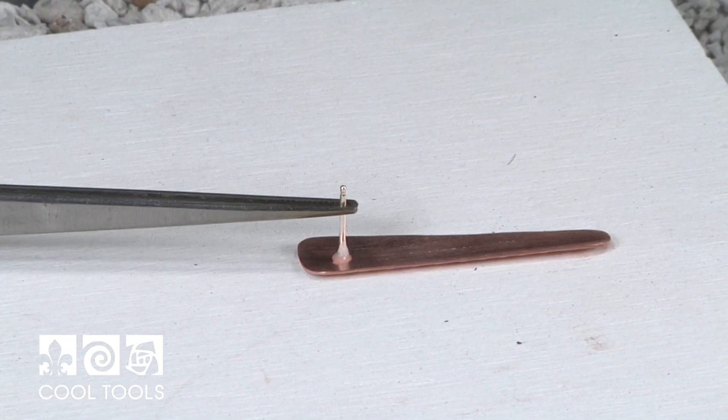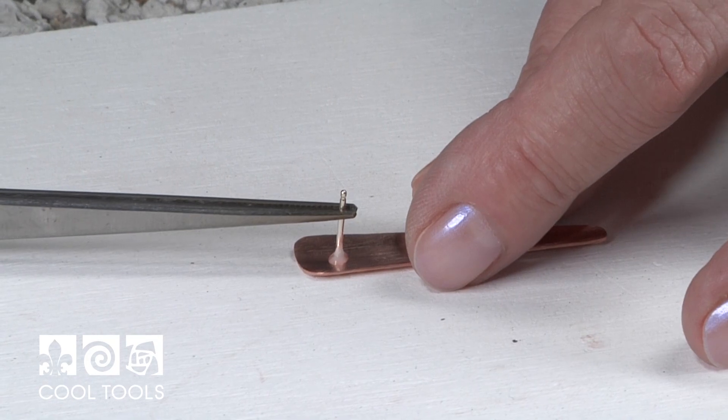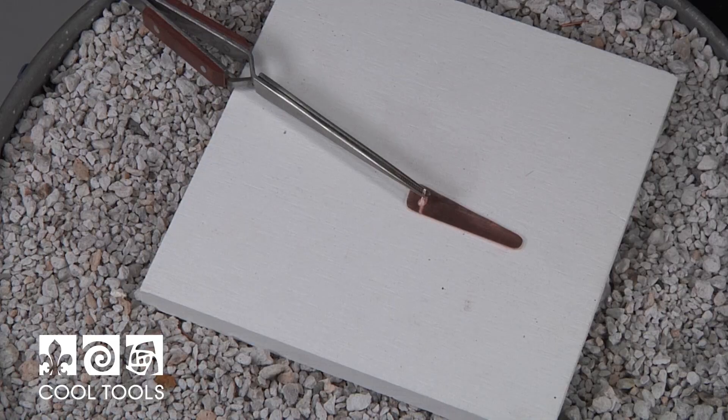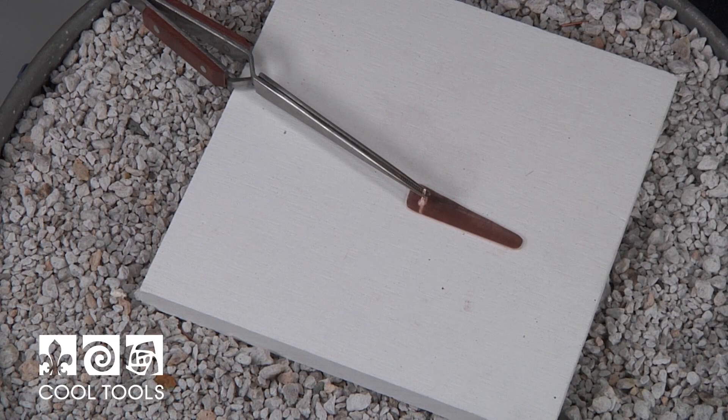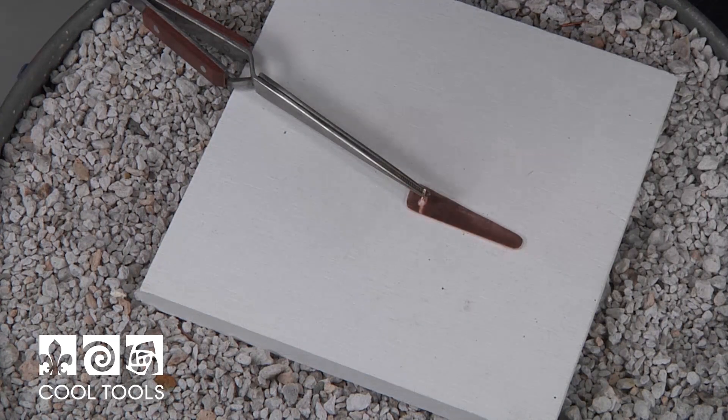So we're going to set this down in place. The cross lock tweezer is suspended across the solder block and it's laying on the edge of the soldering pan so that it keeps it stable.